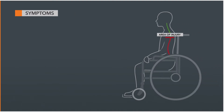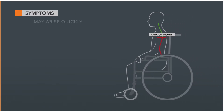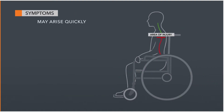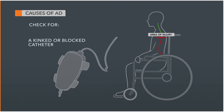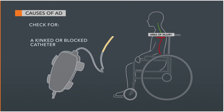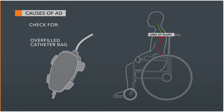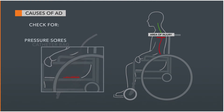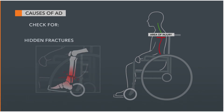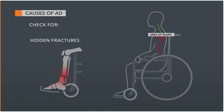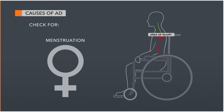Symptoms related to AD may arise quickly. If these symptoms do occur, be sure to check for a kinked or blocked catheter, overfilled catheter bag, pressure sores, hidden fractures, and for women, menstruation.